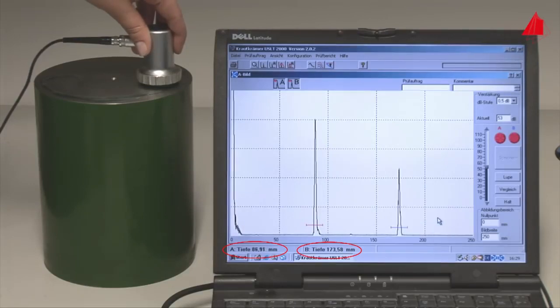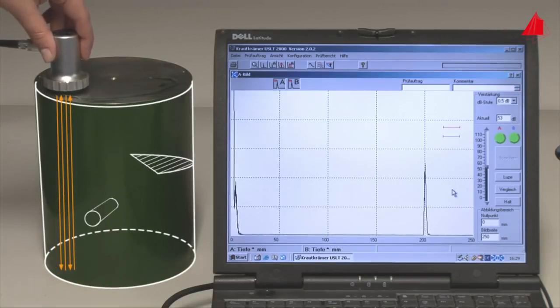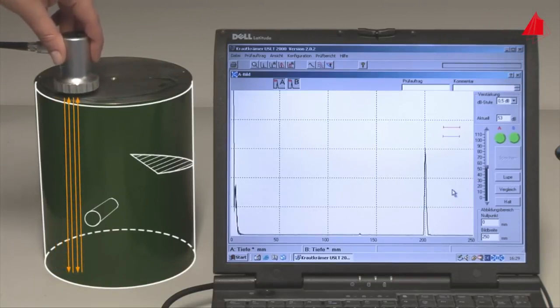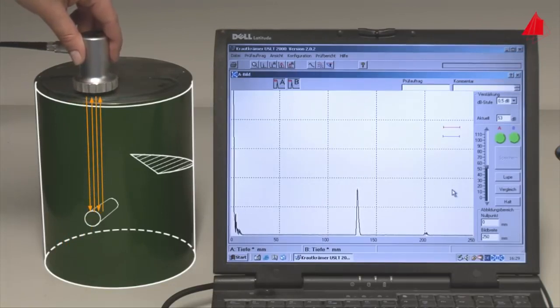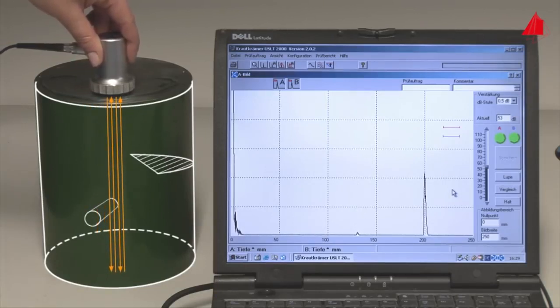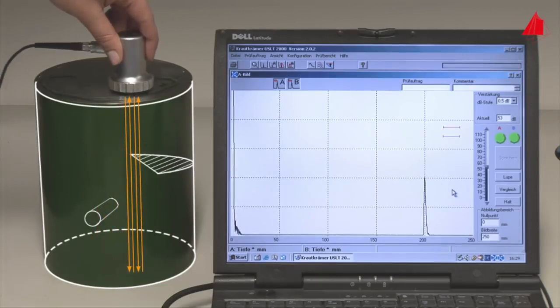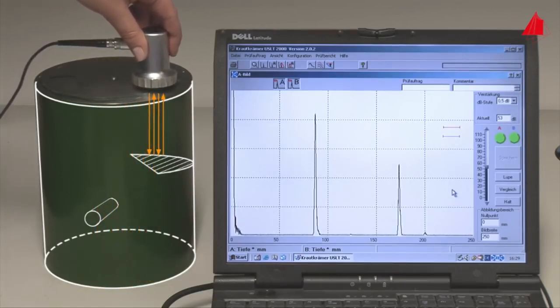And these are the defects: a drill hole and a saw cut, filled up near the surface and painted. They are not visible from the outside. The drill hole in a depth of 130 millimeters, the saw cut 87 millimeters below the surface.